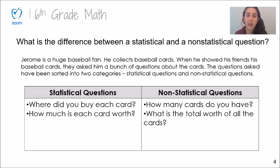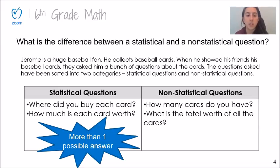My job is based on these examples to figure out what is the difference between a statistical and a non-statistical question. As I look at the statistical questions, I notice that each of these questions has more than one possible answer. Where did you buy each card? Jerome could have bought one card at the corner store, another card when he was visiting his uncle in Connecticut. How much is each card worth? My guess is that the more valuable cards are worth more money, maybe five dollars a card, and the cheaper cards might only be worth 50 cents a card. So I can't answer each of these questions with one single answer.